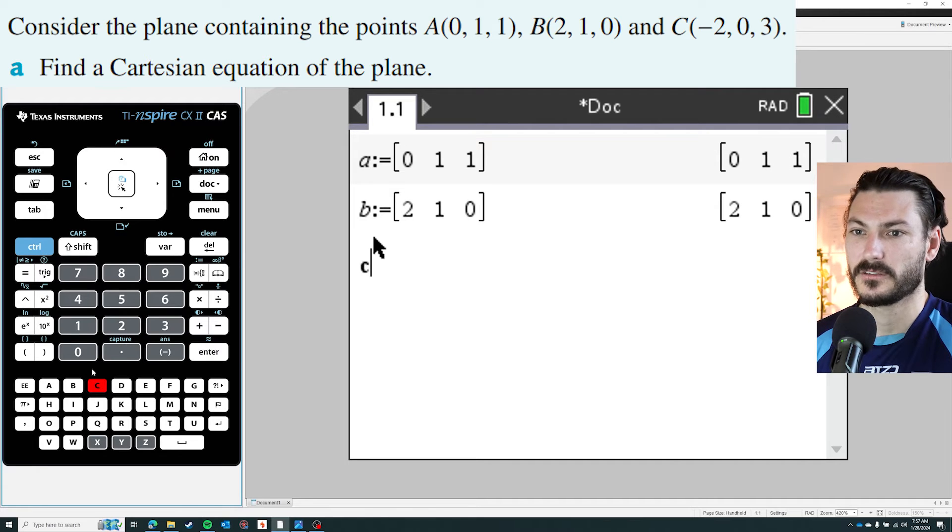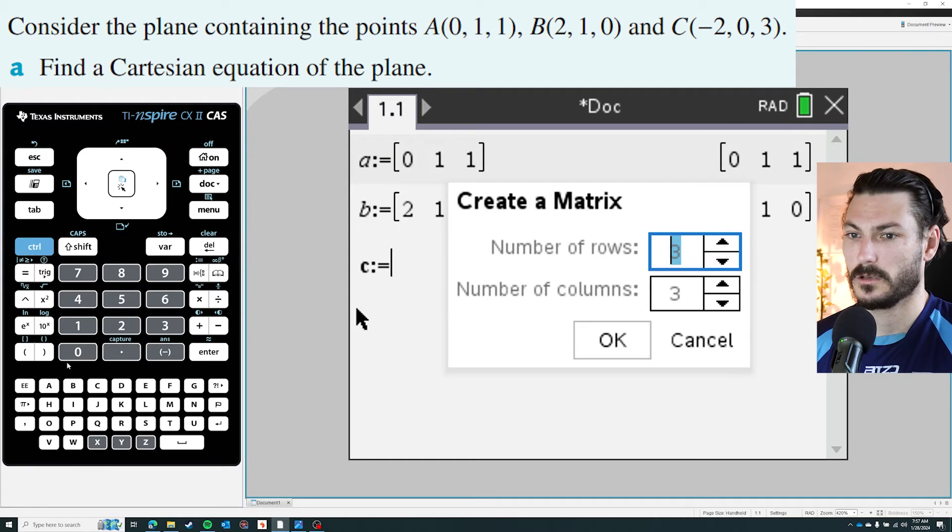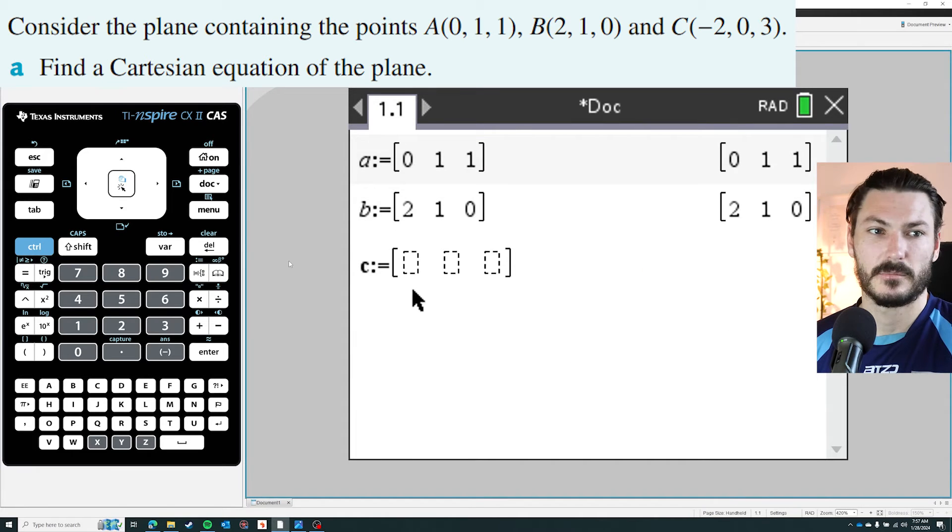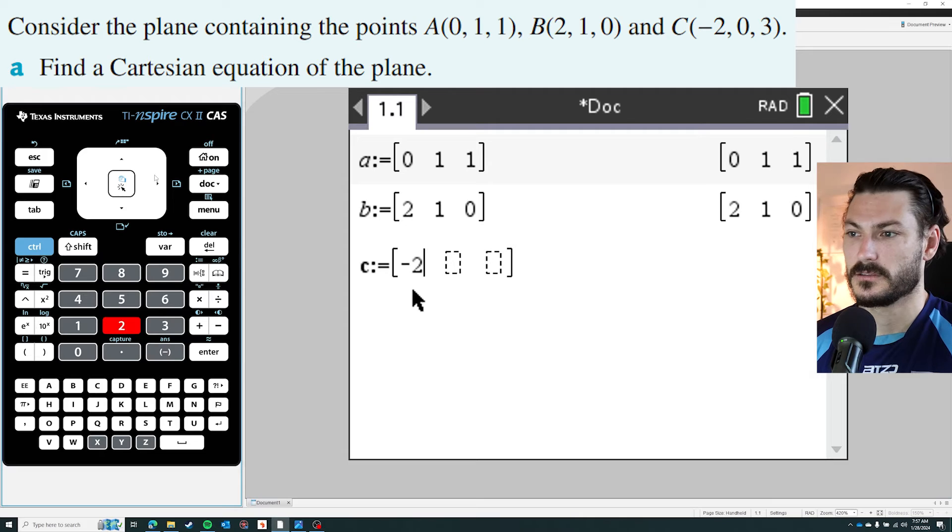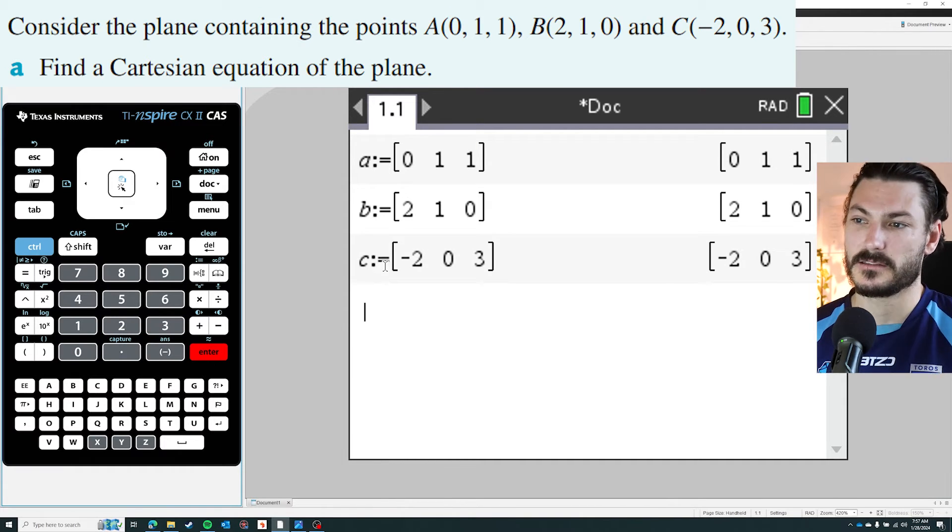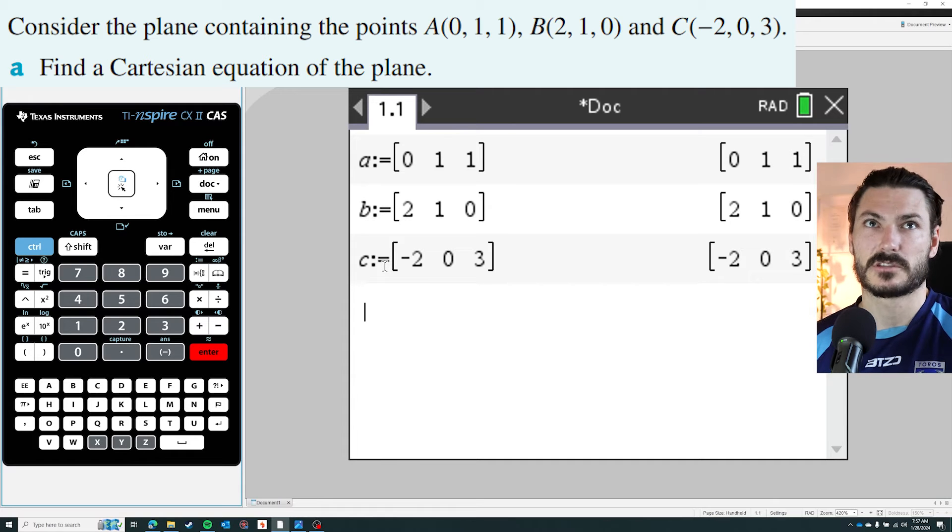And then finally we've got c is defined as one row and it's going to be negative two, zero, and three, and hit enter. So now I have a, b, and c all defined.